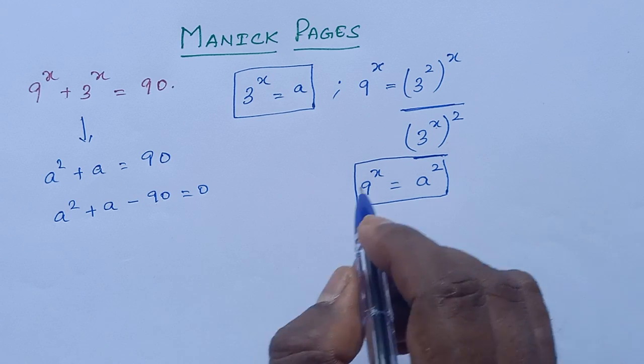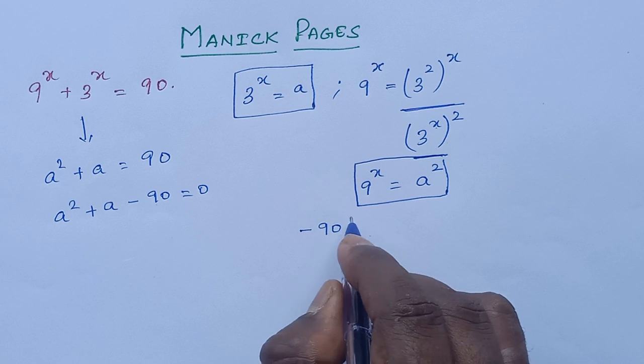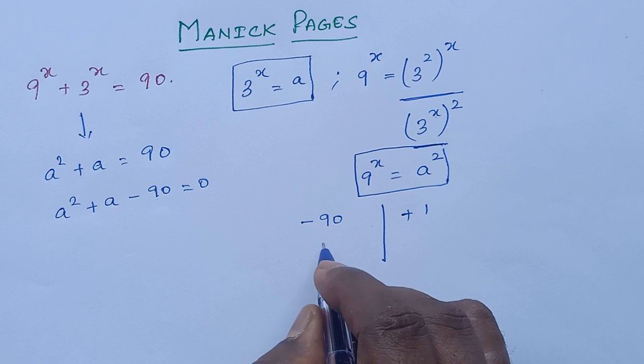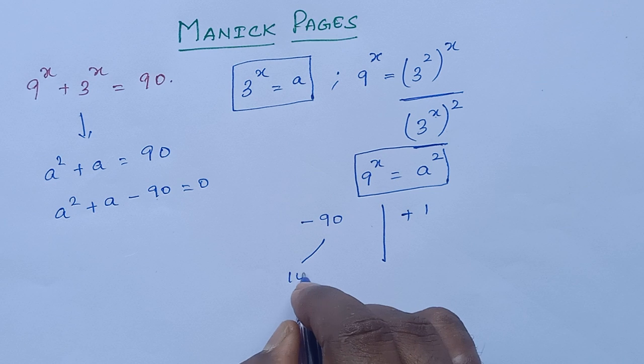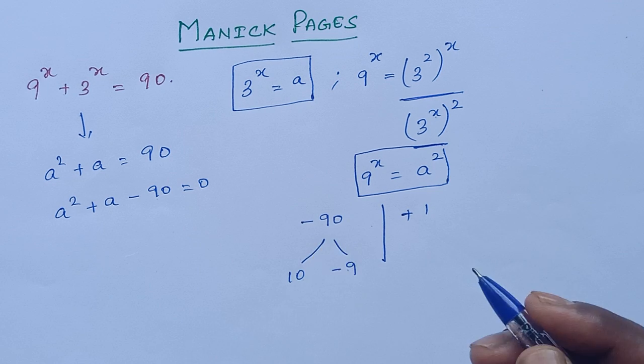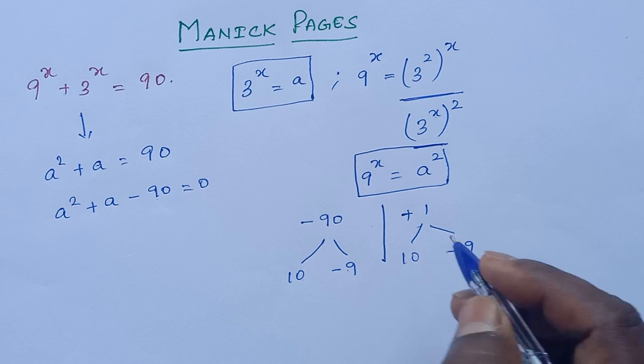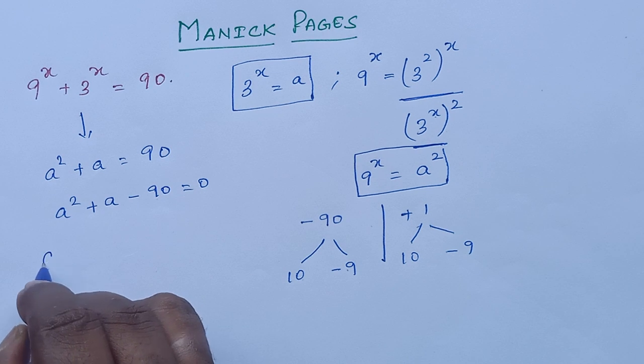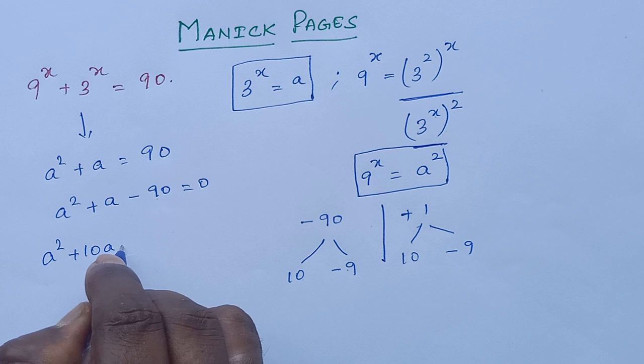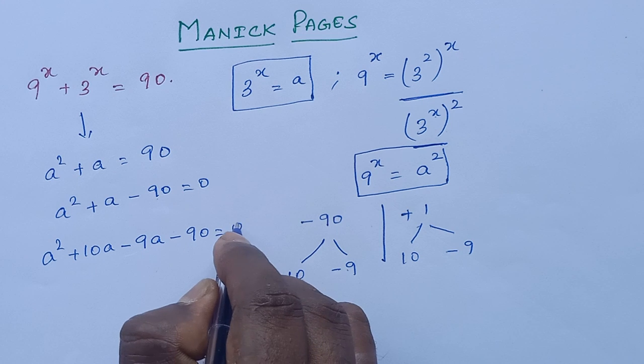Here when we factor minus 90 and plus 1, we use 10 minus 9. So 10 times minus 9 is minus 90, and 10 plus minus 9 is plus 1.